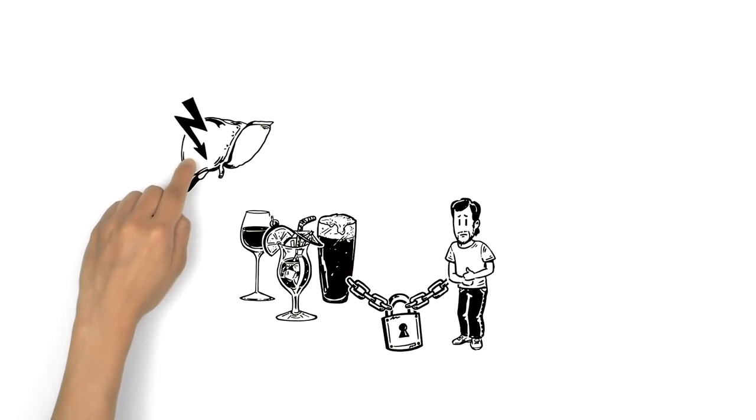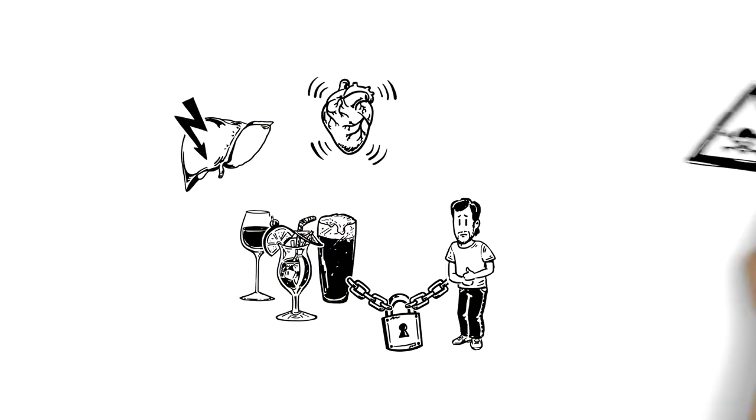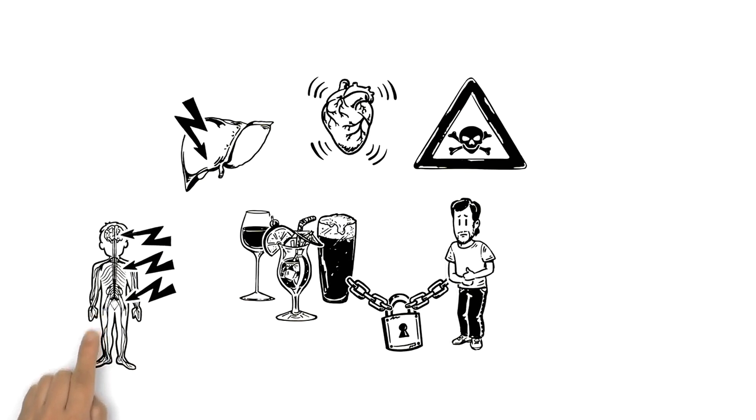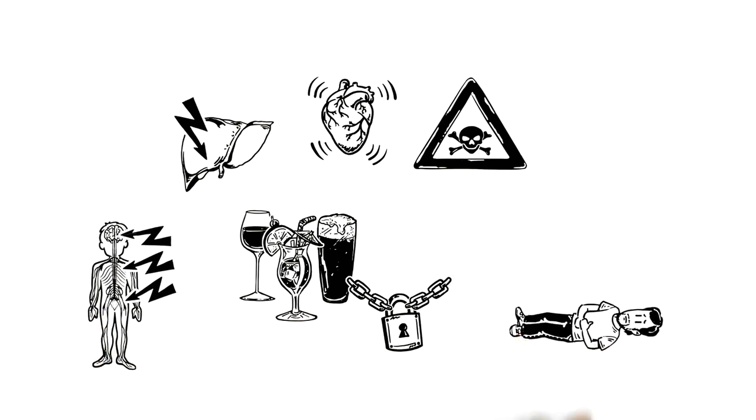Long term problems can include addiction, liver disease, high blood pressure and cancer. Alcohol's effect upon the central nervous system can lead to coma and even death.